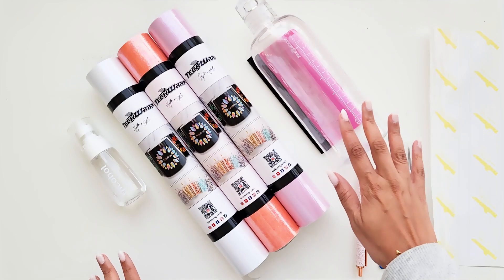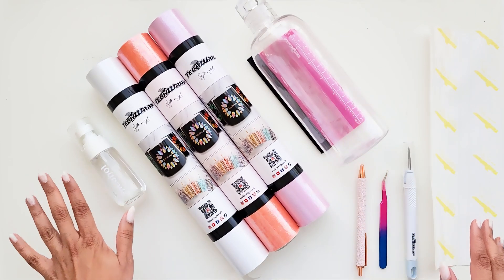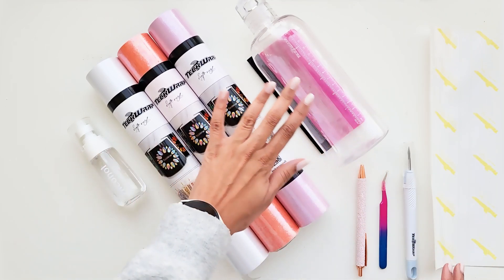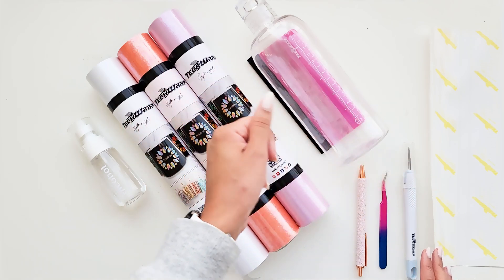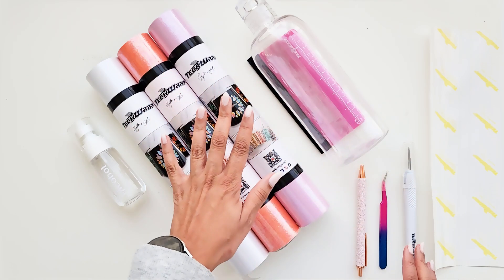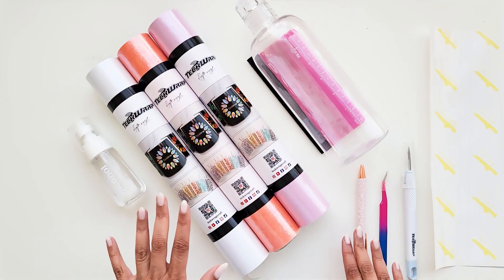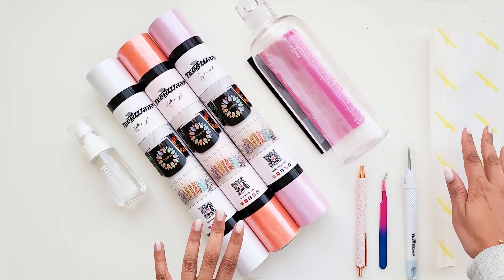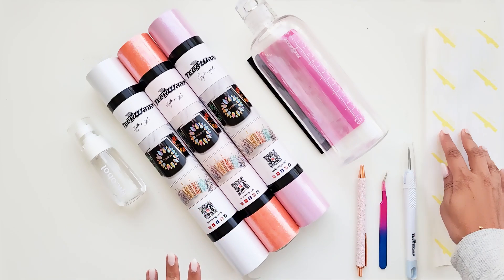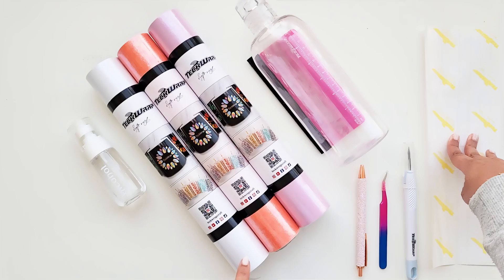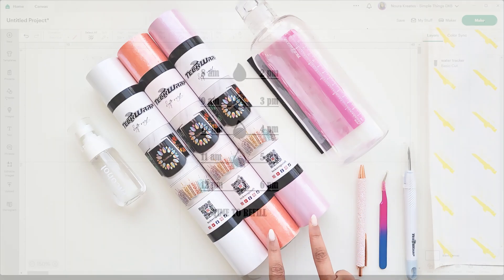So we're going to need a few items for this project. You're going to need your water bottle, some rubbing alcohol to clean your bottle from any oils, debris, or dust, and of course your weeding tools and a transfer tape. I'm going to be using the yellow grid transfer tape because these are glitter vinyls.